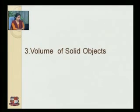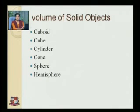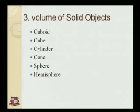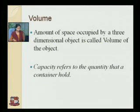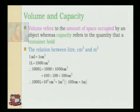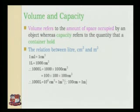Next is volume of a solid object. In this we will learn the volume of cuboid, cube, cylinder, cone, sphere, and hemisphere. Volume is the amount of space occupied by a three-dimensional object. Capacity refers to the quantity that a container holds. Volume refers to the amount of space occupied by an object, whereas capacity refers to the quantity that a container holds.